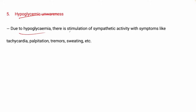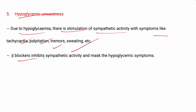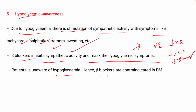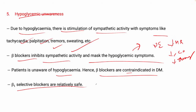Another adverse effect is hypoglycemic unawareness. In hypoglycemia, there is stimulation of sympathetic activity with symptoms like tachycardia, palpitation, tremors, and sweating. Beta blockers inhibit sympathetic activity and mask these hypoglycemic symptoms. They block the effect of norepinephrine, resulting in slowing of heart rate and reduced tremor. The patient becomes unaware of hypoglycemia, so beta blockers are contraindicated in diabetes mellitus. Beta-1 selective blockers are relatively safer than non-selective beta blockers.